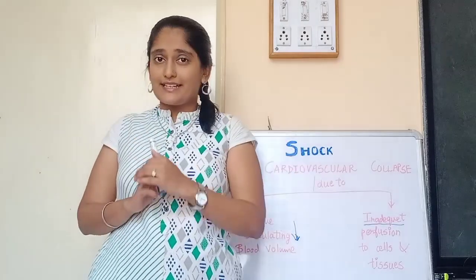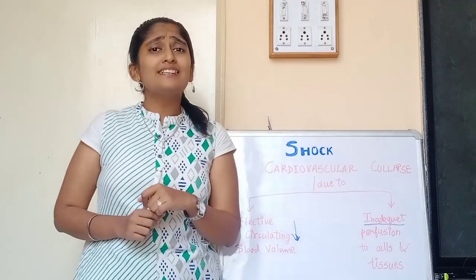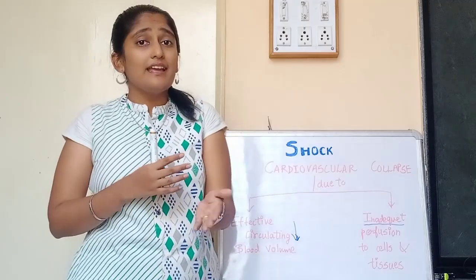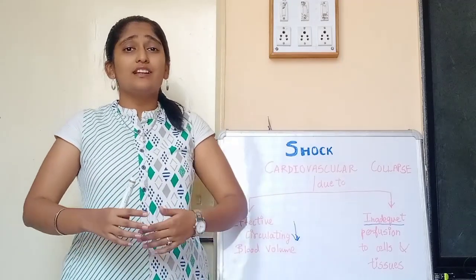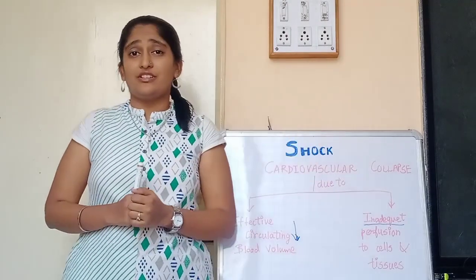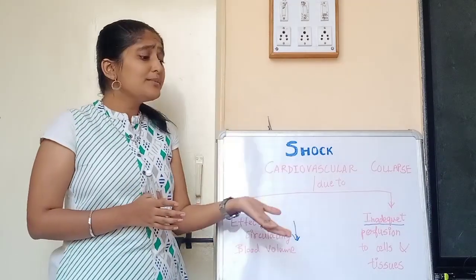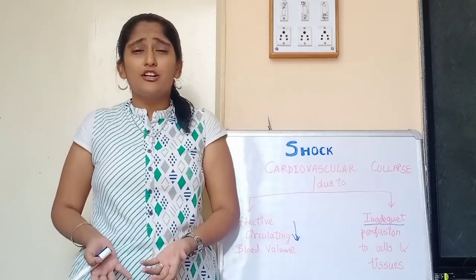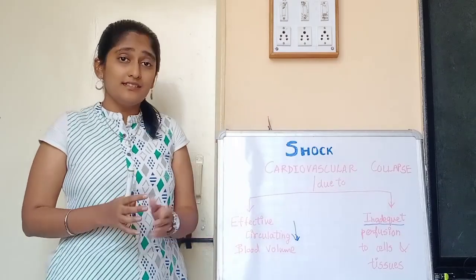There are two types: primary shock and secondary shock. The secondary shock is also known as true shock. In secondary shock, there is an inadequate supply between the oxygen supply and the oxygen requirements of the cell. Primary shock may result from a sudden death of a relative, from fear, or a sudden attack of emotions.